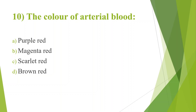Question 10: The color of arterial blood. Option A, Purple red; Option B, Magenta red; Option C, Scarlet red; Option D, Brown red. Answer is Option C, Scarlet red. The color of venous blood is dark red in color.